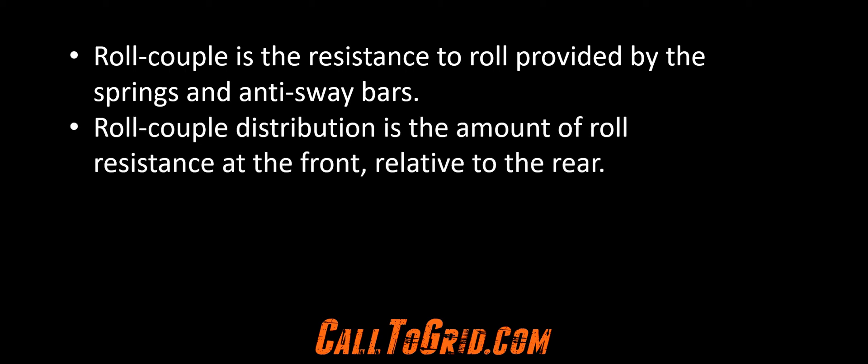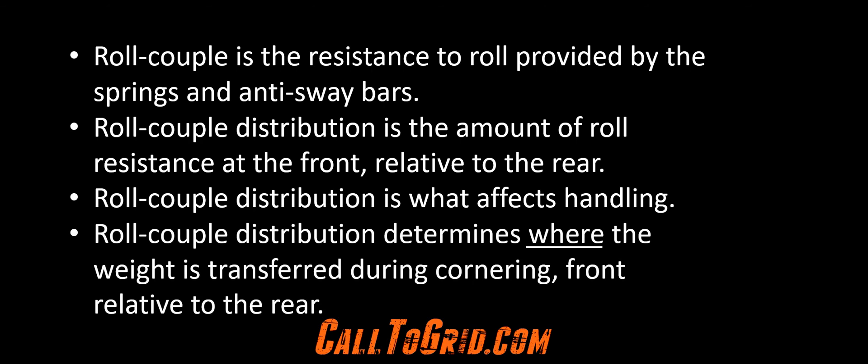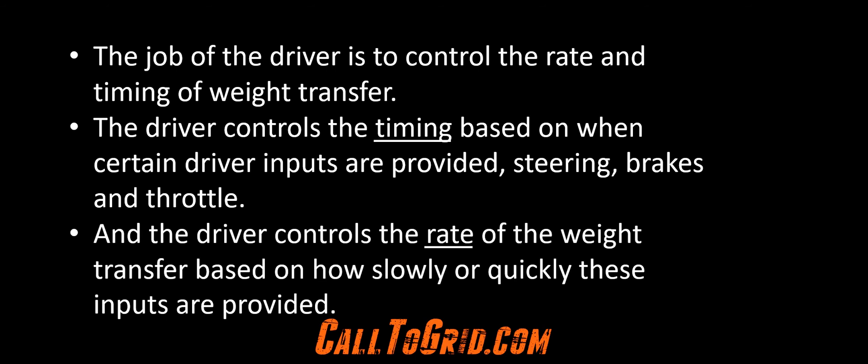Roll couple is the resistance to roll provided by the springs and sway bars. Roll couple distribution is the amount of roll resistance at the front relative to the rear. Roll couple distribution is what affects handling and determines where the weight is transferred during cornering. The job of the driver is to control the rate and timing of weight transfer — the driver controls timing based on steering, brake, and throttle inputs, and controls the rate based on how slowly or quickly these inputs are provided.